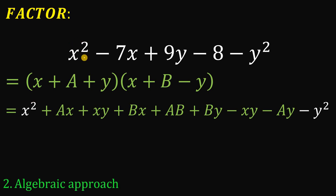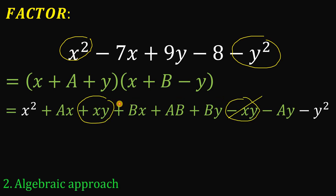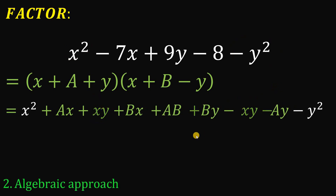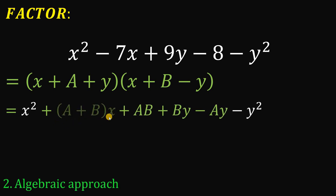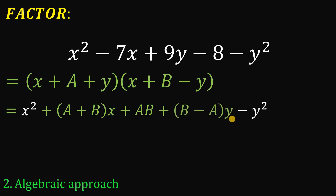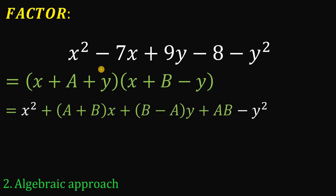We have x squared and negative y squared as expected. Factoring out x gives a plus b times x; factoring out y gives b minus a times y; and the remaining constant is ab. Rearranging to match the pattern of our original expression: the coefficient of x is negative 7, the coefficient of y is 9, and the constant term is negative 8.